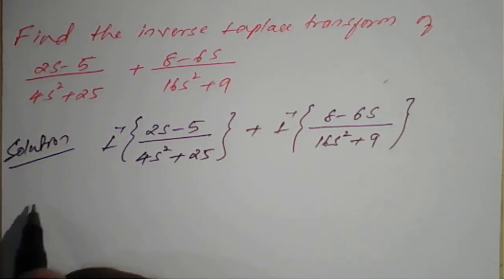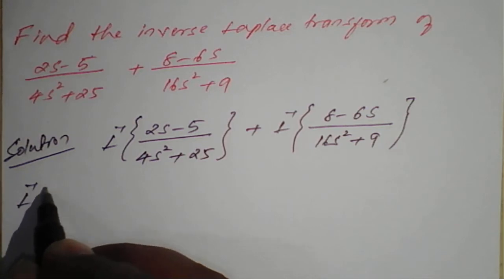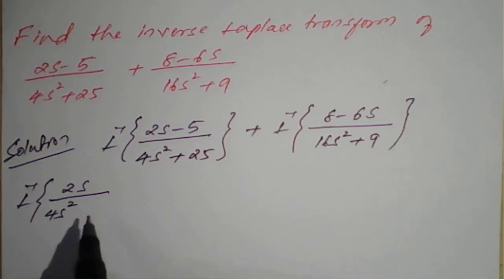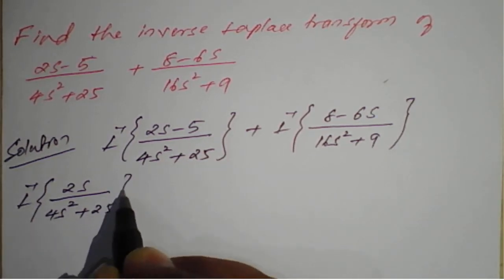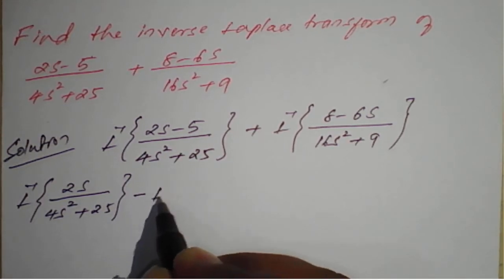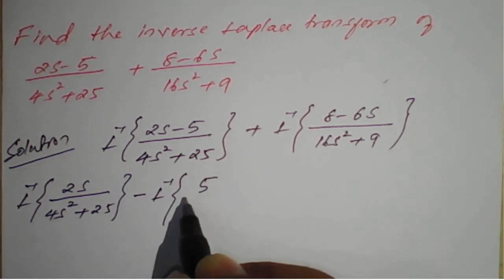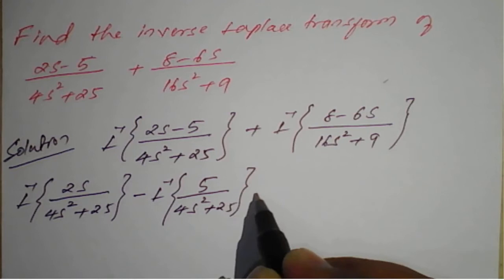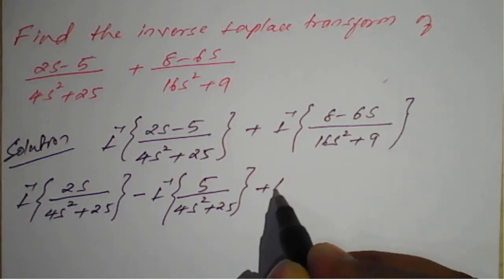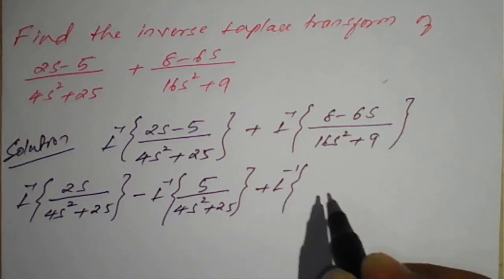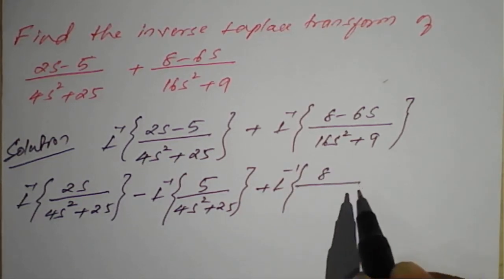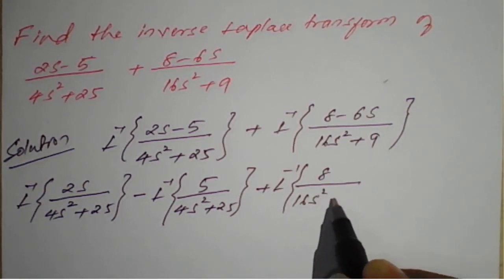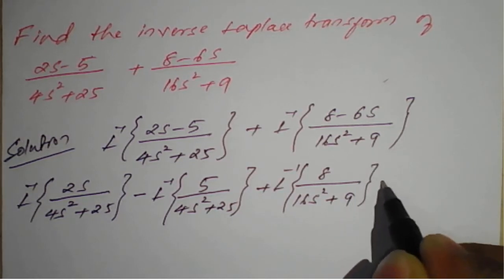We will first separate using the linear property. So: inverse Laplace transform of 2s/(4s² plus 25), minus inverse Laplace transform of 5/(4s² plus 25), plus — separating the second term as well — inverse Laplace transform of 8/(16s² plus 9), minus inverse Laplace transform of 6s/(16s² plus 9).